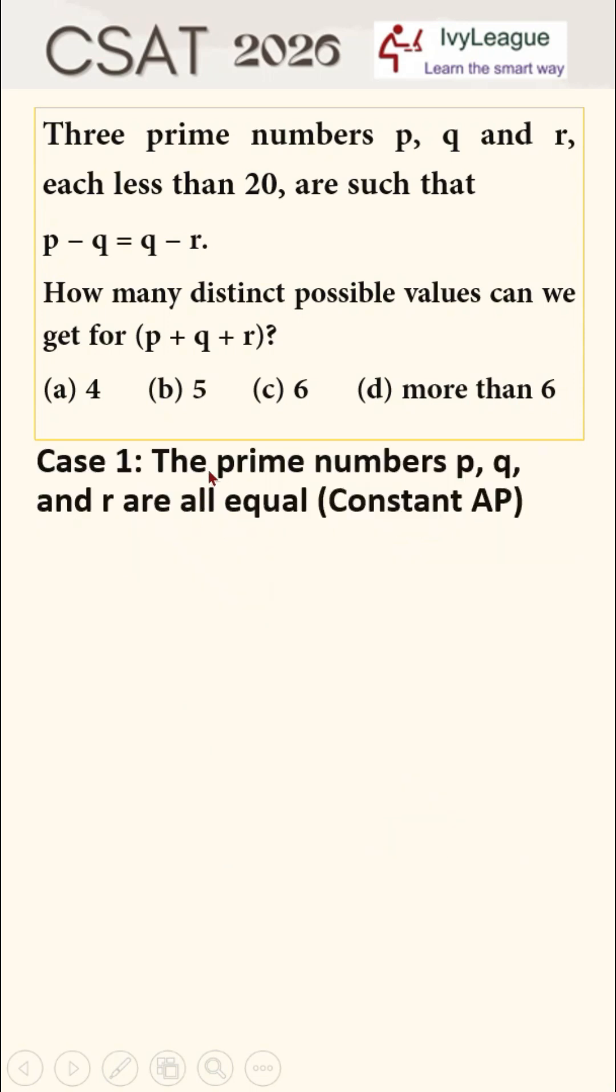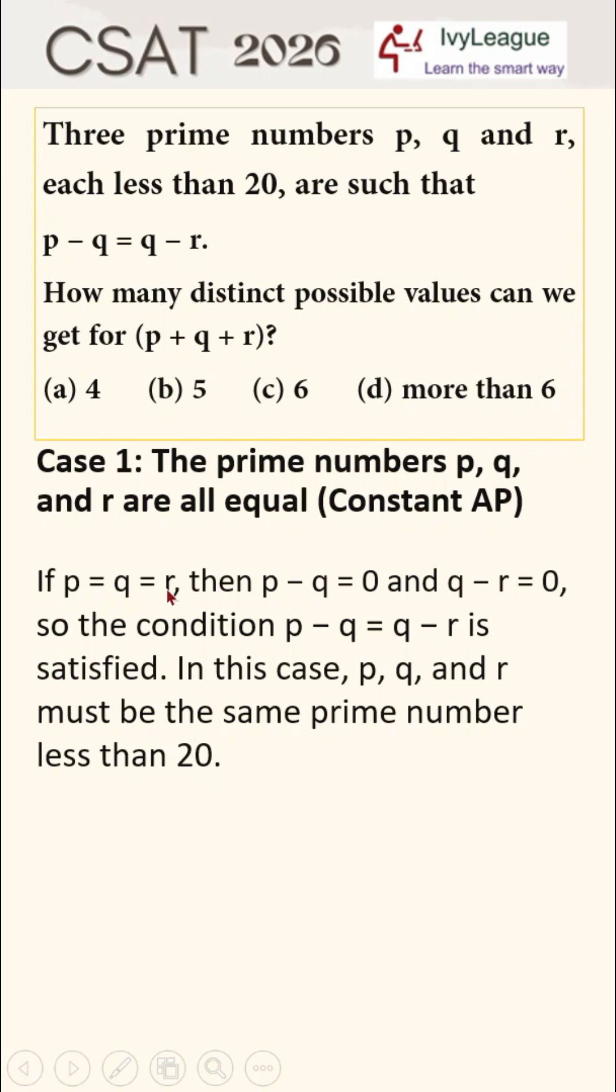Let's look at case number one where prime numbers p, q, and r are all equal, and this is a case of constant AP. If p is equal to q is equal to r, then p minus q will be equal to zero and q minus r equal to zero, so the condition p minus q is equal to q minus r is satisfied and met.